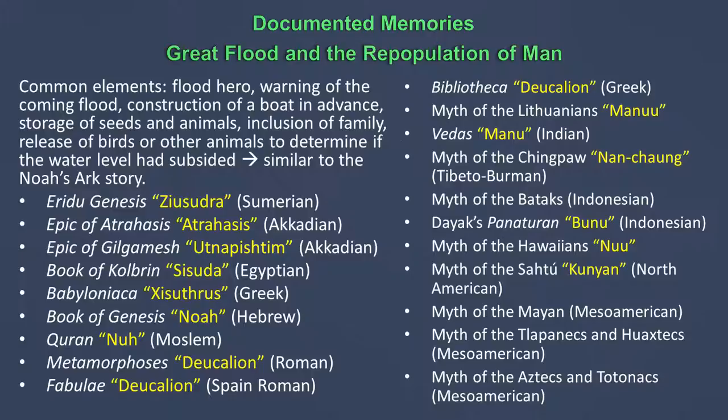The flood heroes include figures from the Atrahasis Genesis, Ziusudra, the Epic of Atrahasis, the Epic of Gilgamesh's Utnapishtim, Book of Genesis Noah, Quran, Metamorphoses Deucalion, Myth of the Lithuanian Manu, Myth of the Ching Pon Amchong, Myth of the Hawaiians, Myth of the Satucanians, Myth of the Mayans, Myth of the Tlipanecs and Huastecs, and Myth of the Aztecs and Totonacs.